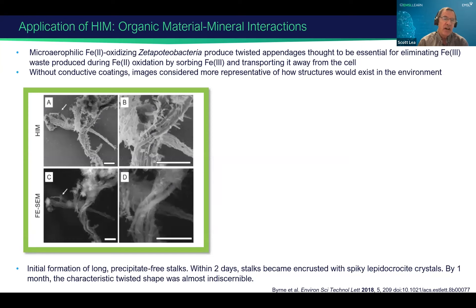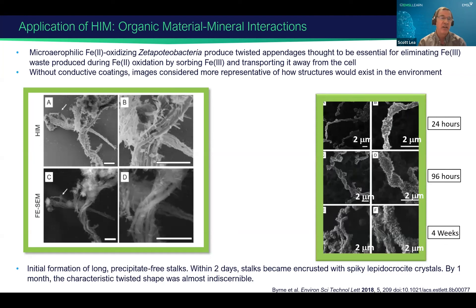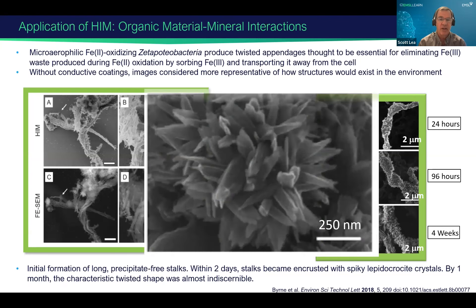The marine bacteria Zetaproteobacter produces twisted appendages thought to be important for eliminating iron-free waste produced from oxidation of iron(II), as part of its metabolism — absorbing iron(III) and transporting it away from the cell. Here's an example of these appendages on the surface without any coating, more representative of what you'd see in the environment. As you incubate the material in seawater and watch it over one day, four days, four weeks, you can see lepidocrosite crystals grow on these structures very nicely.